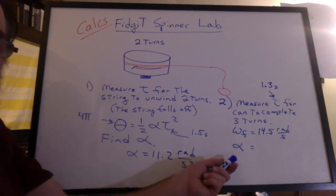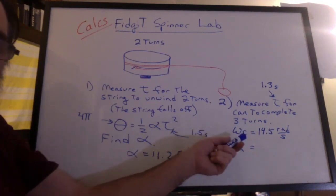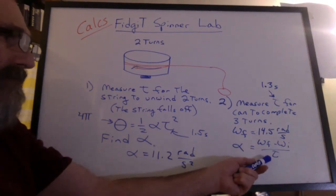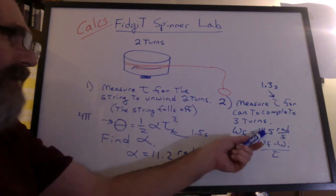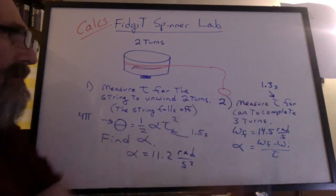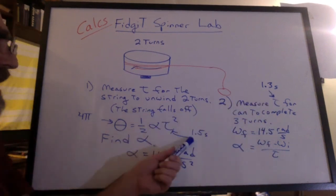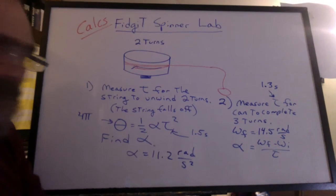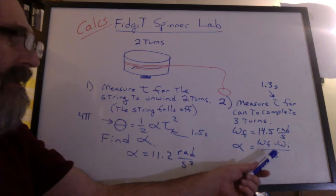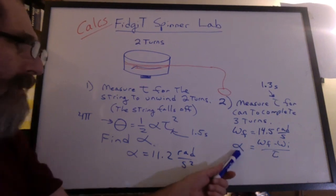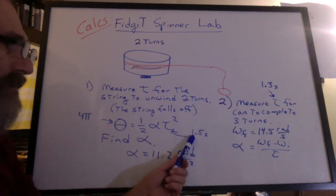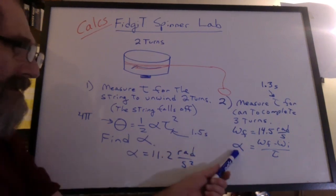Now you find alpha using this information. Well, you can use omega final minus omega initial divided by time. We know the omega final. The omega initial is zero. But what's that time? Is it this time? Or is it this time? It has to be the time to go from the initial to the final angular velocity. This must be the time while we're accelerating. We're not accelerating out here. So this must be the time we use in this equation to calculate the acceleration.